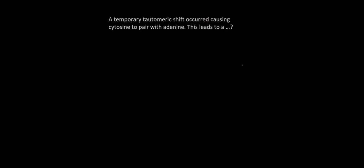A tautomeric shift is a temporary mutation — the mutation happens for a small amount of time and then reverts back to whatever it was originally. When solving tautomeric shift problems, it's extremely important to keep in mind what is happening to that DNA at different stages of its life. We'll solve a problem together, and then I'll give you a problem to try on your own, and then we'll come back and solve that together.